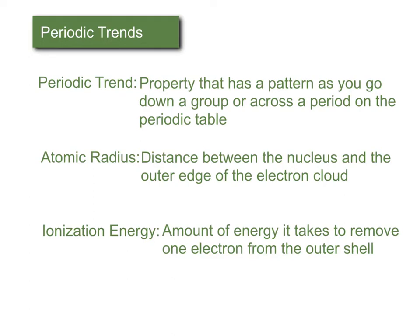The other factor, other than the number of shells, that affects periodic trends is effective nuclear charge. We talked about this a little bit today. That's a balance between the positive charge in the protons in the nucleus and the negative charge that is shielding the electrons and causing repulsion with that outer shell.